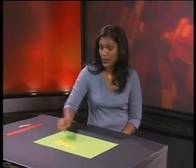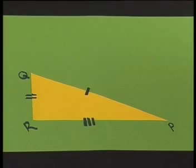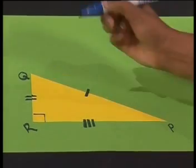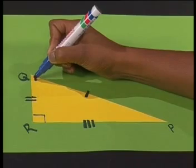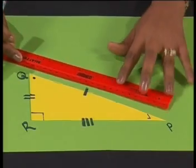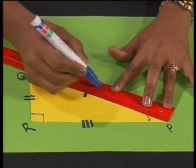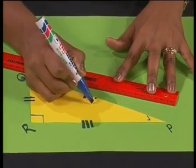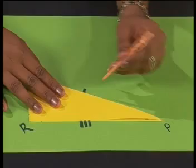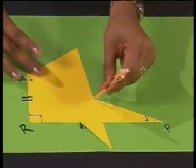We know that the angle at R is 90 degrees, and we can mark angle Q and P differently because they are not equal. Angle R is 90 degrees; angle Q and angle P are different sizes. Now we have chosen the midpoint of line QP to be our point of rotation. So let's find the midpoint of line QP and mark it as point S. Let's fix the triangle at point S and rotate it through 180 degrees.